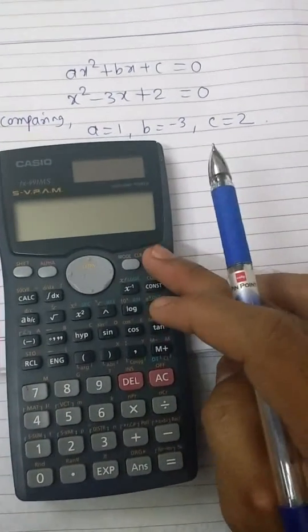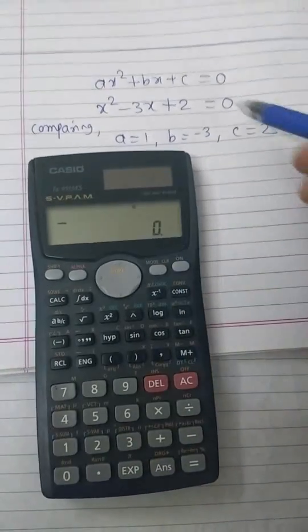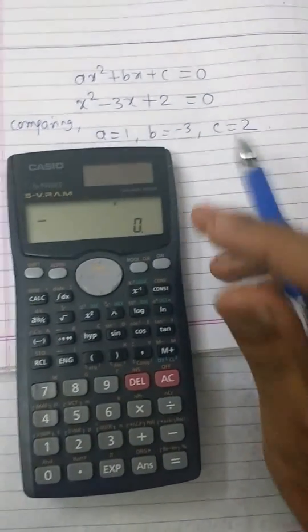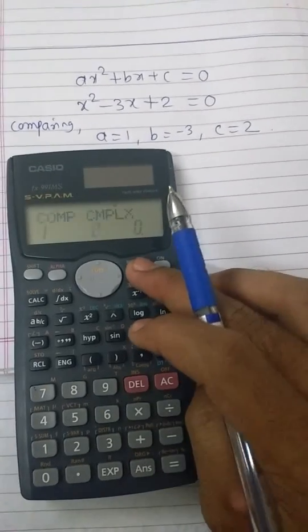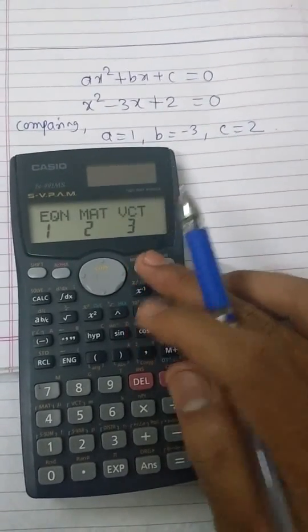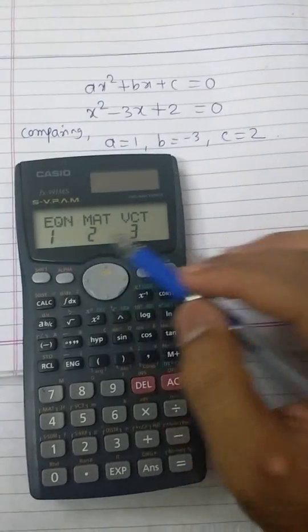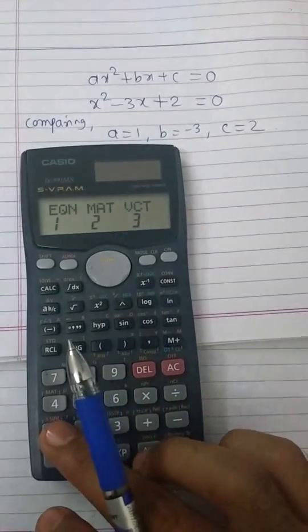For this purpose, first turn on your calculator by pressing the on button. Our interest is in equation mode. To choose the equation mode, press mode button three times. Then we will see three options. Out of these three options, press one button for equation mode.